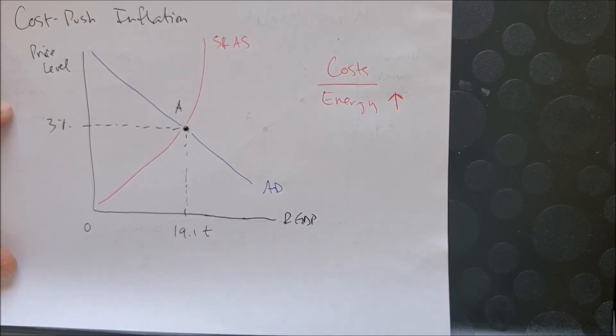When these countries come together and decide to only produce X amount of output each month, each year, they are influencing the cost of energy.